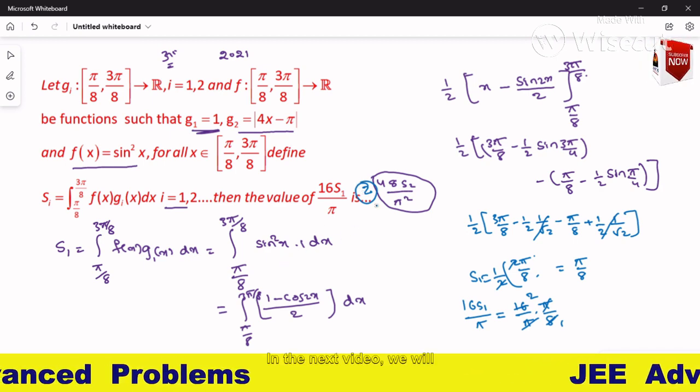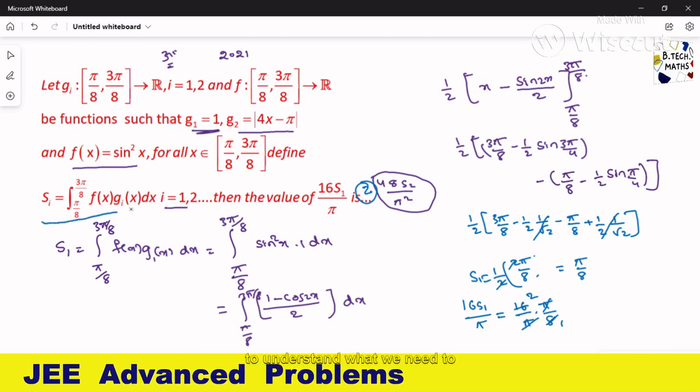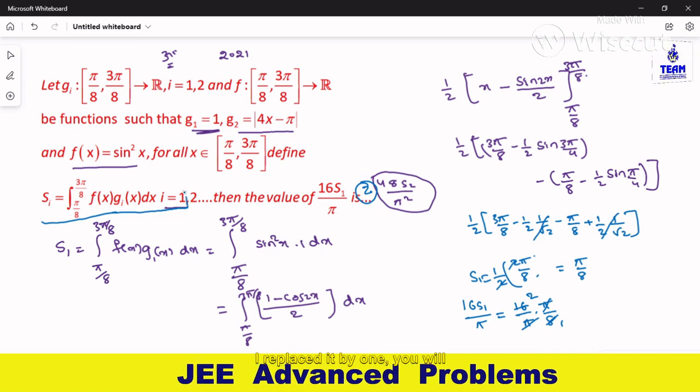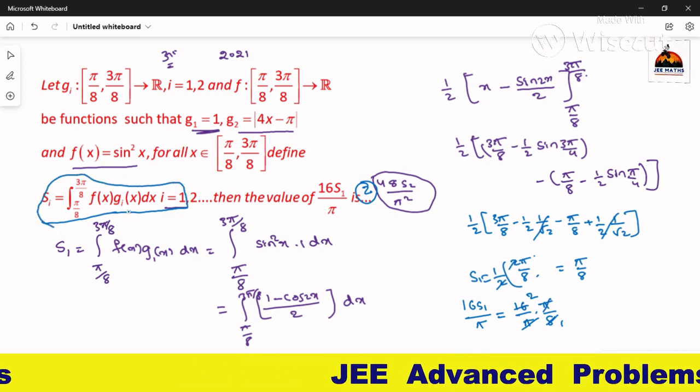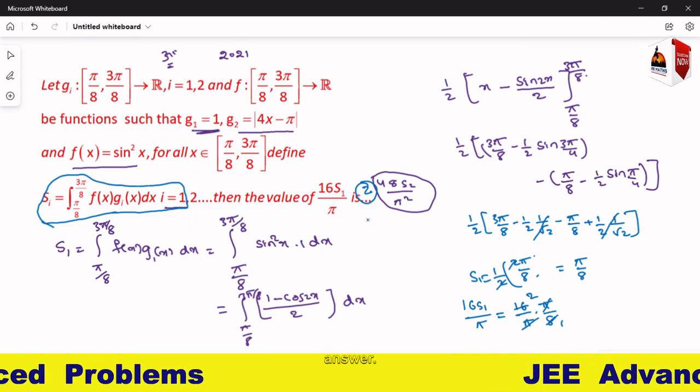That's it. Is it clear? In the next video we will solve the second problem. Here only the point you have to understand: what we need to find is S1, which is this one. I replace i by 1, you will get f of x with the given function, g1 is 1, just simplify and you will get the required answer.